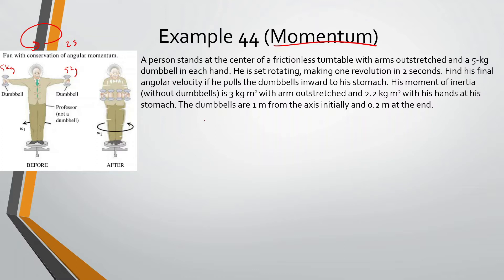One thing to know is whenever there's no torque acting on an object, that means the angular momentum is conserved. So this is saying that the angular momentum at the beginning, when he has his arms stretched out, and when he brings them in, is conserved. Since there's no torque, there's nothing acting on him preventing him from speeding up or slowing down. Even though he does speed up, there's no torque making that happen.